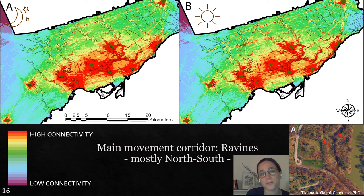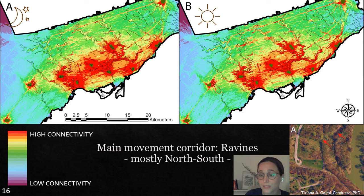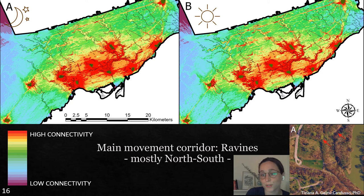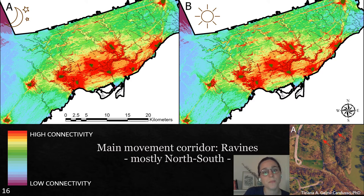This is very interesting and also expected, because ravines are highly vegetated and they also have hiking trails along them. So they create streamlined movement, giving coyotes the possibility to move for long distances.